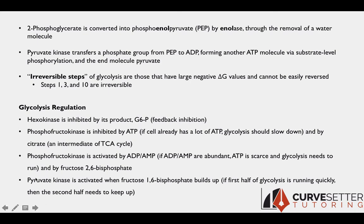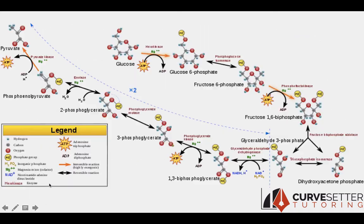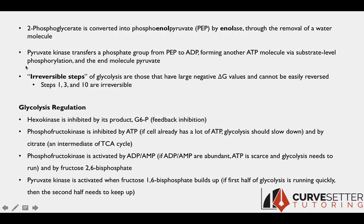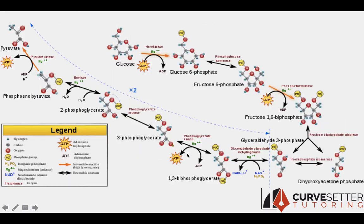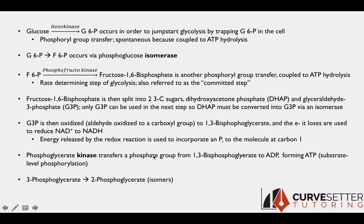Finally, pyruvate kinase, the enzyme that catalyzes the last step, is activated by fructose-1,6-bisphosphate. That makes sense — if this molecule is building up, a lot is being produced, and if the first half of glycolysis is running quickly, the second half needs to keep up. Here's another diagram depicting glycolysis that might be helpful, showing the molecules much more clearly.